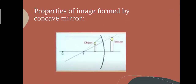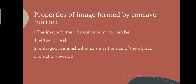Now we will read about the concave mirror. The concave mirror can form images that are either virtual or real. When we see an image inside the mirror, it is a virtual image. When an image is projected onto a screen — like movies on a projector screen — that is called a real image. The concave mirror can also form images that are enlarged, diminished, or the same size as the object, and the image can be erect or inverted.